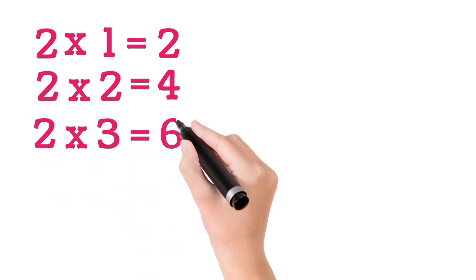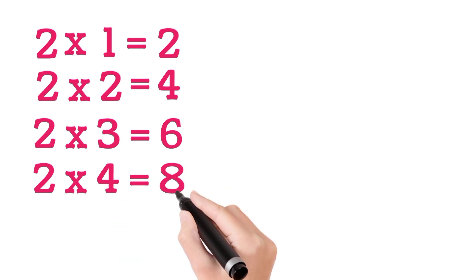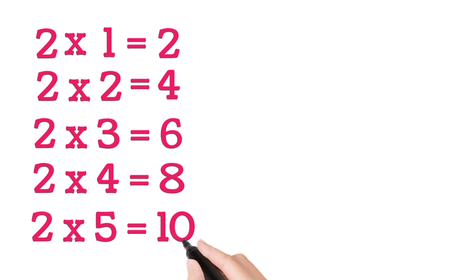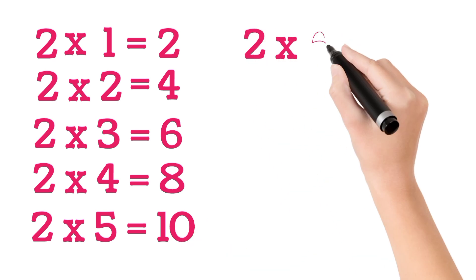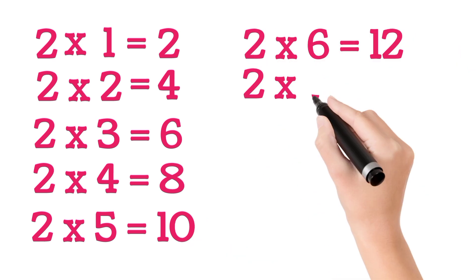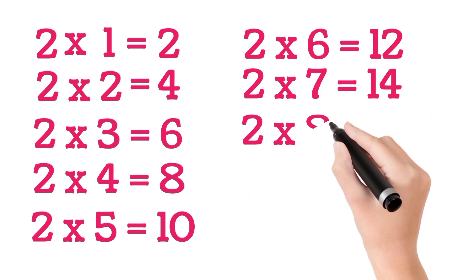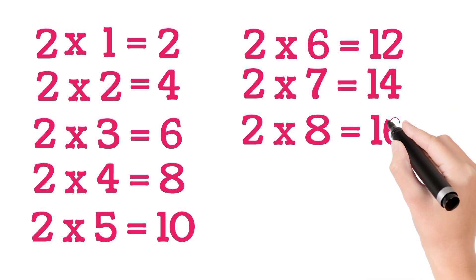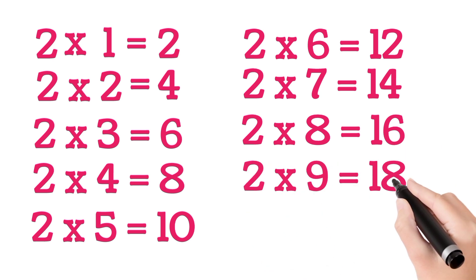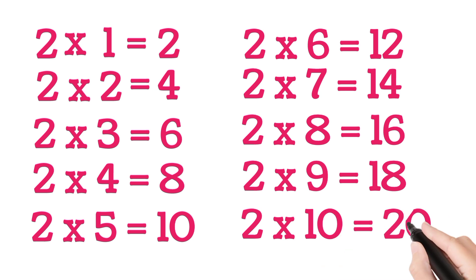Two Three's a Six. Two Four's a Eight. Two Five's a Ten. Two Six's a Twelve. Two Seven's a Fourteen. Two Eight's a Sixteen. Two Nine's a Eighteen. Two Ten's a Twenty.